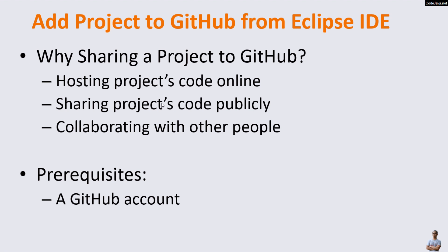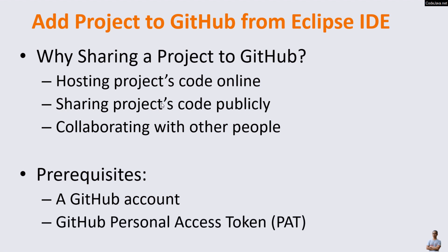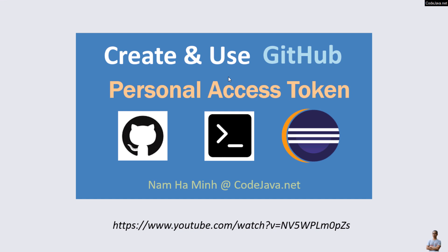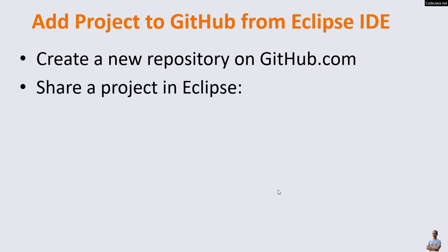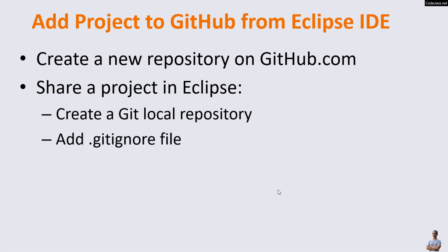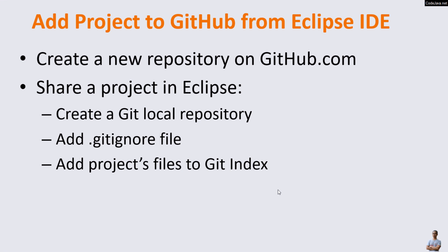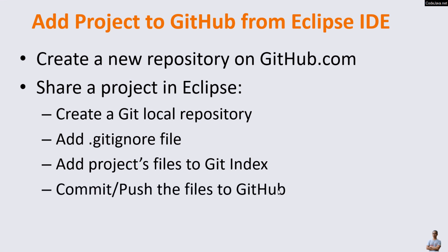Before following this video, ensure that you already have a GitHub account and have created a GitHub personal access token. If you have not created a personal access token, I recommend you follow the video 'Create and Use the GitHub Personal Access Token' on my YouTube channel. The steps for adding a project to GitHub from Eclipse IDE are: create a new repository on GitHub.com, share the project in Eclipse by creating a local git repository, add a .gitignore file, add project files to the git index, and finally commit and push the files to GitHub.